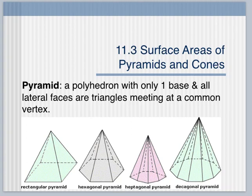Today's lesson is about how to calculate the surface area of pyramids and cones. A pyramid is defined as a polyhedron with only one base, and all the lateral faces are triangles meeting at a common vertex.